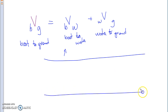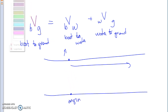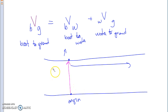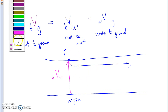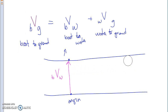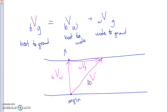Imagine a river flowing east and you're trying to cross to the other side. Your origin is on one bank. The velocity of the boat relative to the water — if water weren't moving — would be straight across. But since the water is moving, we add the velocity of the water relative to the ground, and you end up downstream. That resultant is the velocity of the boat relative to the ground.